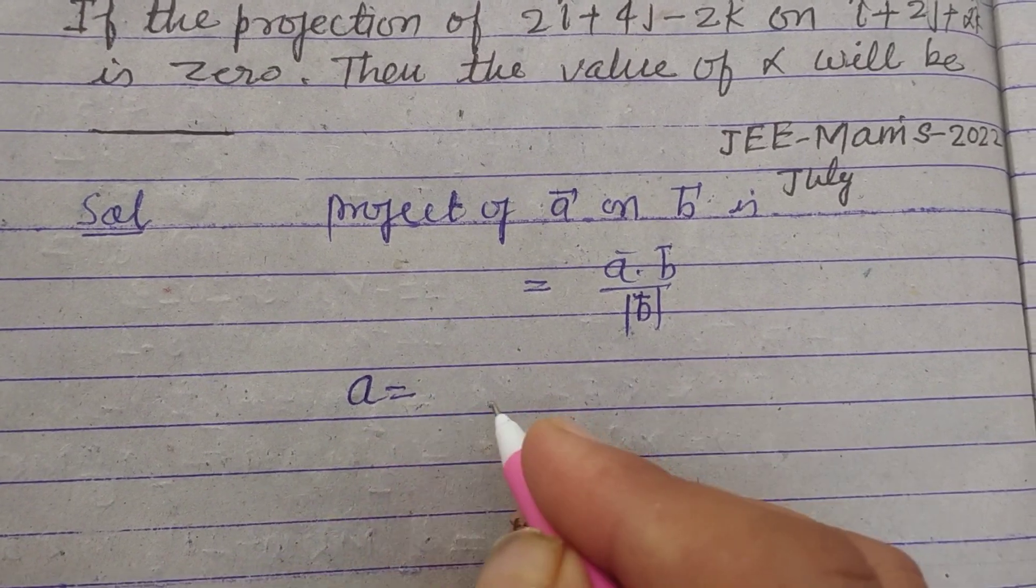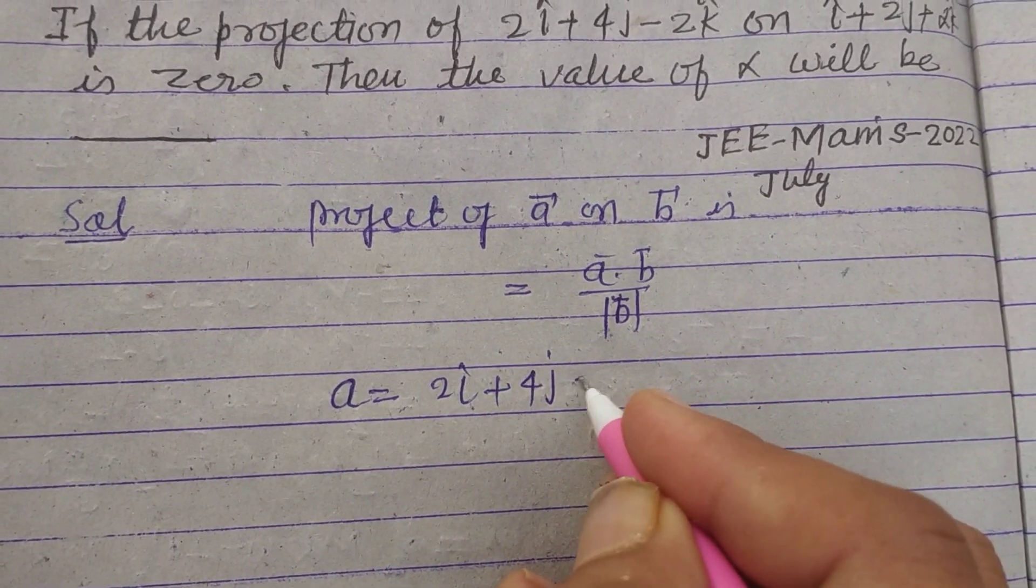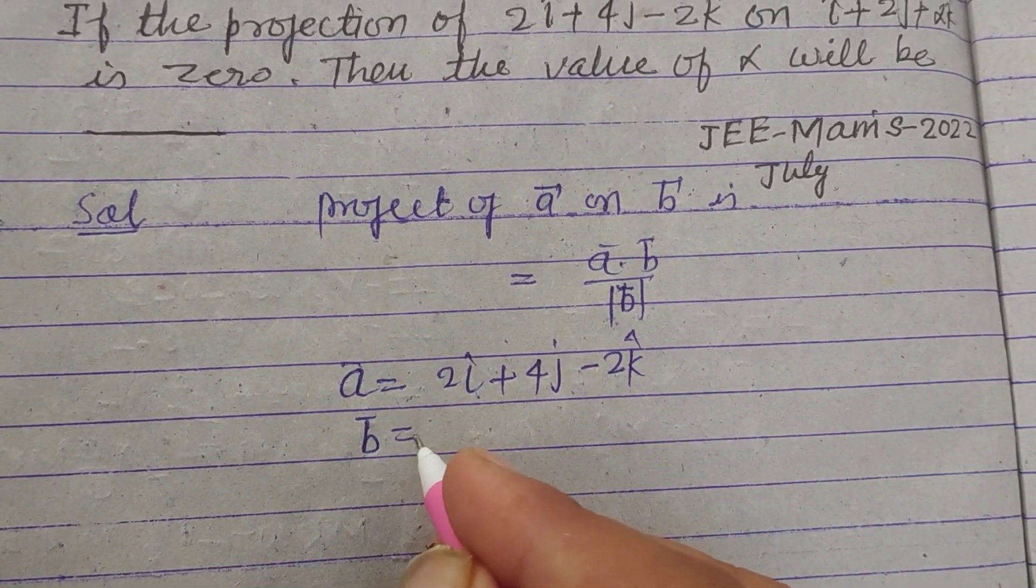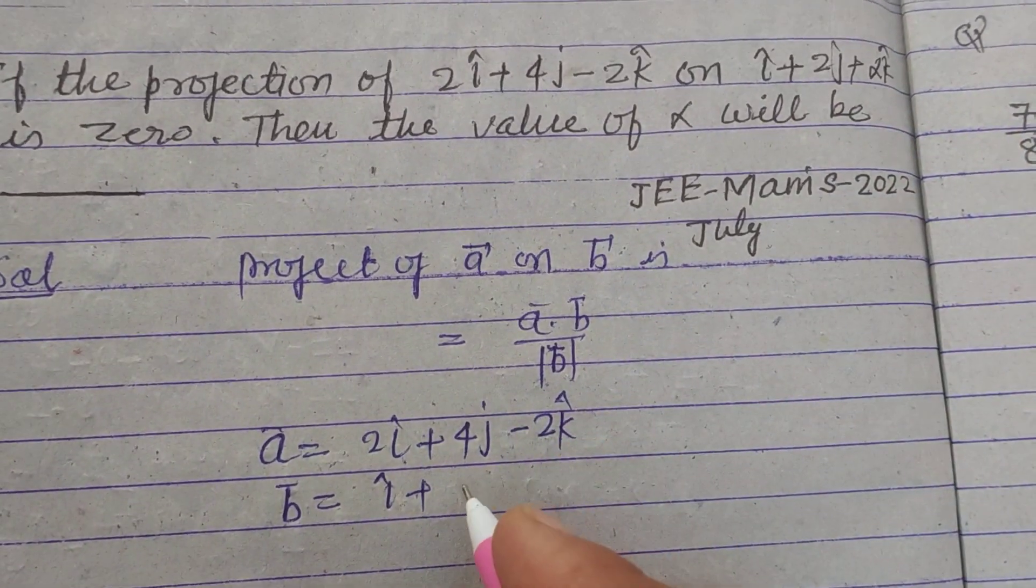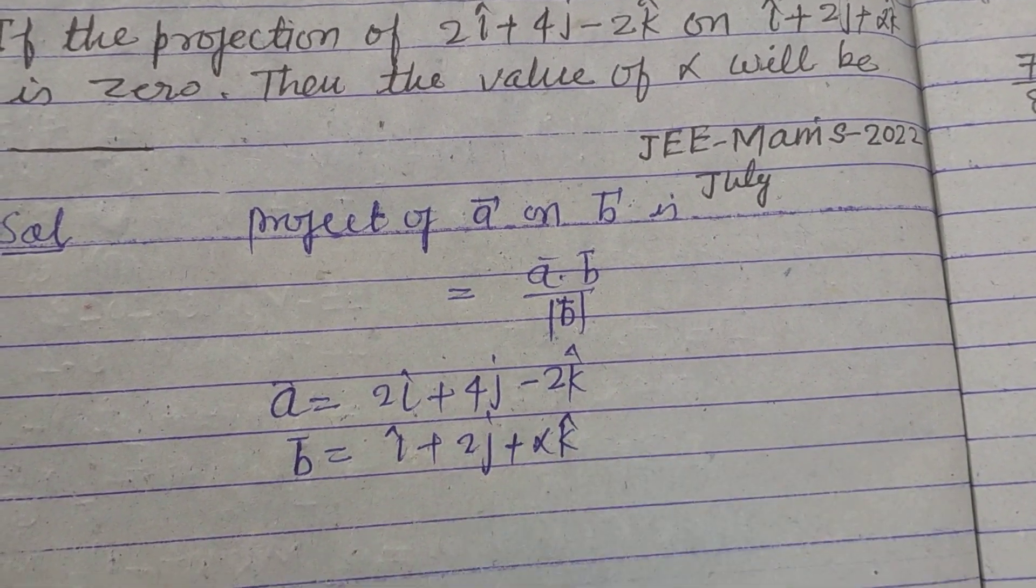So here a is given to us which is 2i cap plus 4j cap minus 2k cap, and b vector is given here i cap plus 2j cap plus alpha k cap.